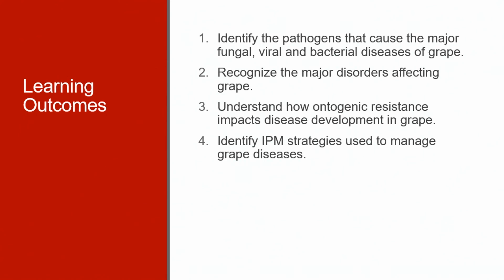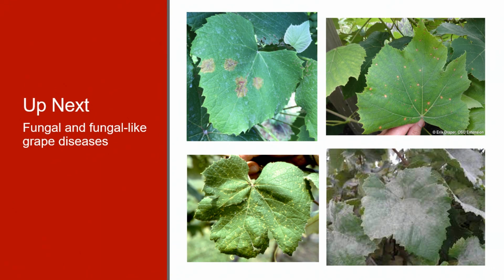The learning outcomes for grape diseases are: first, you should be able to identify the pathogens that cause the major fungal, viral, and bacterial diseases of grape. Second, you should be able to recognize the major disorders affecting grape. Third, you should be able to understand how ontogenetic resistance impacts disease development in grape, which will be covered when we look at the fungal diseases of grapes. And lastly, you should be able to identify IPM strategies used to manage grape diseases, and also strategies used to generate clean planting stock materials. The next group of lectures will cover fungal and oomycete diseases and how these diseases are managed.